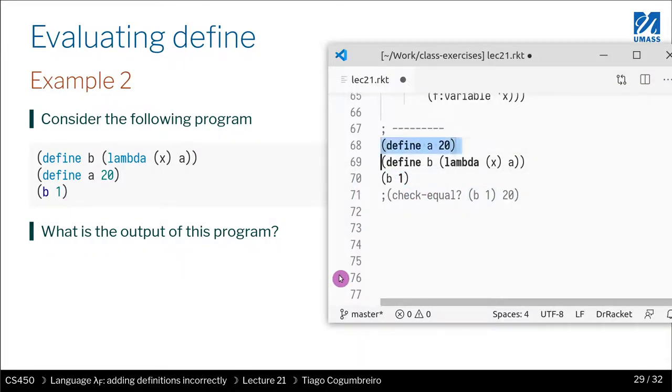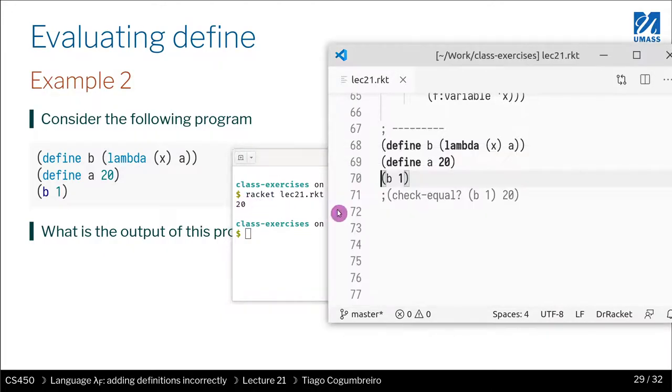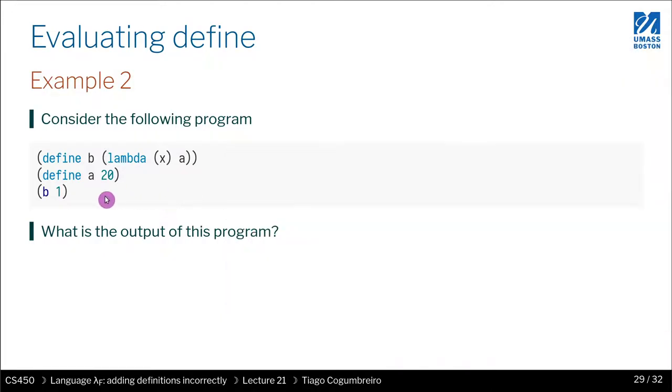So let's see if we just move this here and if we run it, we get 20 again. Why? Because it only matters what is the value once you call it, right?